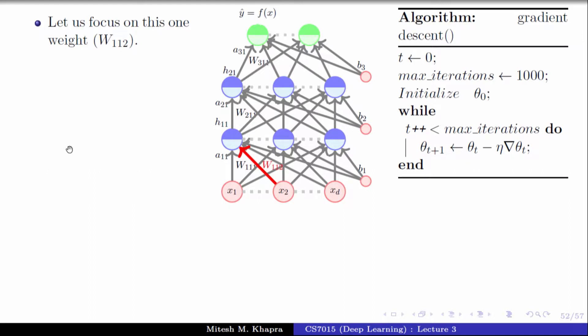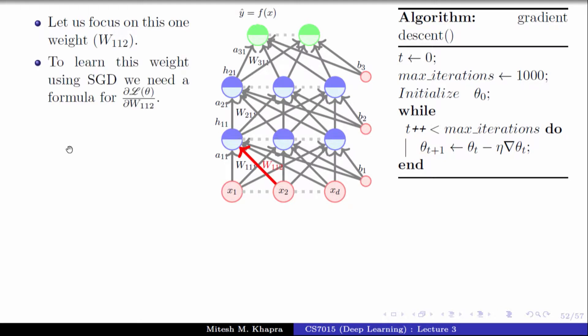So let's focus on one such weight, and I have deliberately taken one which is farthest away from the output. Your output is at the green layer and I have taken a weight in the input layer which is w1,1,2 — the 1,2 weight in the first layer, that means the 1,2 entry of the W1 matrix. So to learn this weight using gradient descent, we need a formula for the partial derivative of the loss function with respect to this weight.